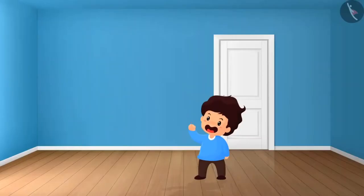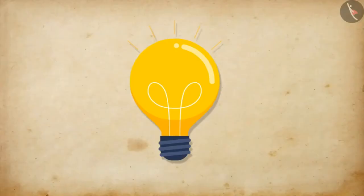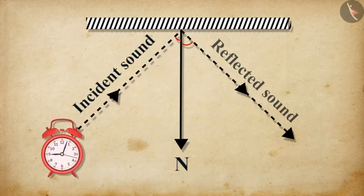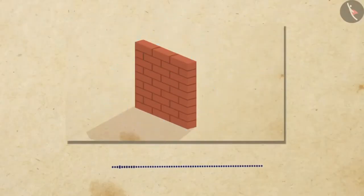When a sound gets reflected at a solid or liquid surface, it follows the same rules of reflection which are followed by light. The directions in which the sound is incident and the sound is reflected make equal angles with the normal of the reflecting surface at the point of incidence, and all three lie in the same plane. An obstacle of a large size, which may be smooth or rough, is required for the reflection of sound waves.